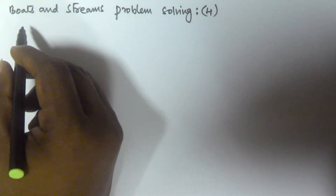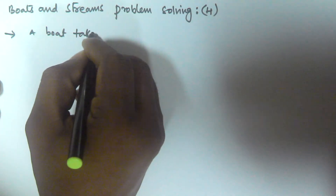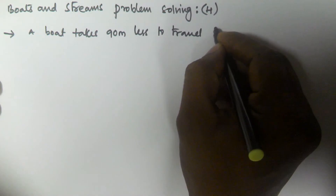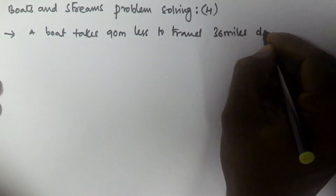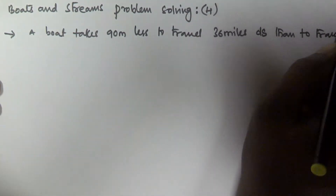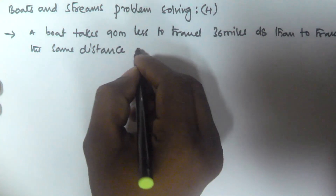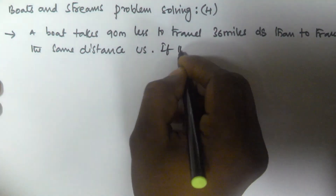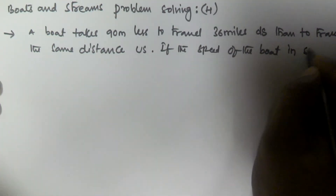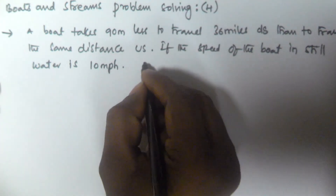Hello friends, in this video we will see how to solve the problem related to boats and streams. A boat takes 90 minutes less to travel 36 miles downstream than to travel the same distance upstream. If the speed of the boat in still water is 10 miles per hour, then we have to find the speed of the stream.